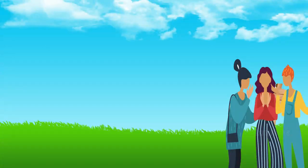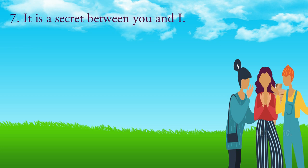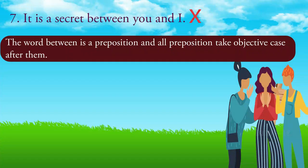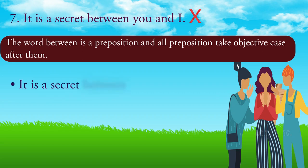Number seven: It is a secret between you and I. Please note, the word 'between' is a preposition and all prepositions take the objective case after them. Now repeat the correct sentence after me: It is a secret between you and me.